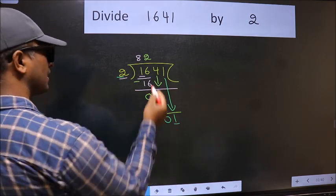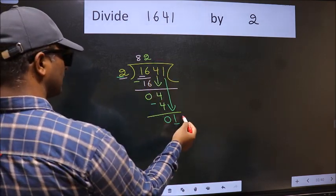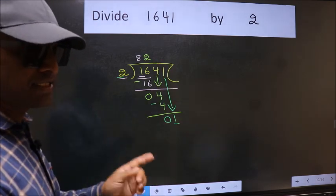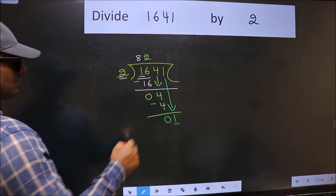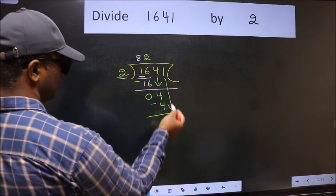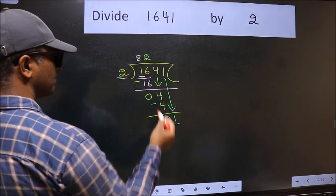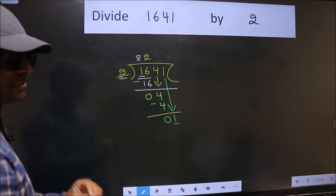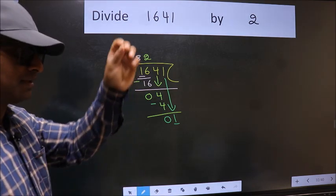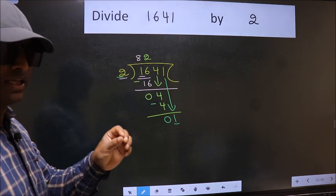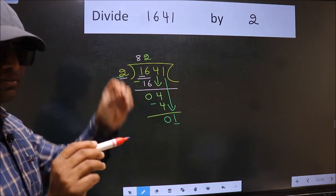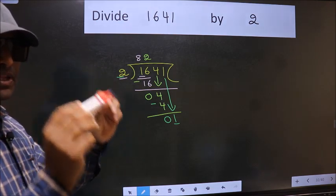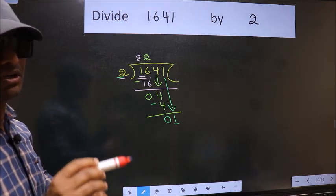So what many do is they directly put dot, take 0, which is wrong. Why is it wrong? Because just now you brought this number down, and in the same step you want to put dot, take 0, which is wrong. I repeat: bring down the number and also put dot, take 0. Both at the same step you should not do.